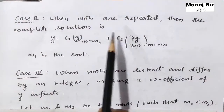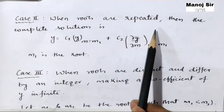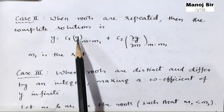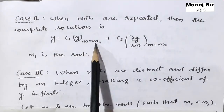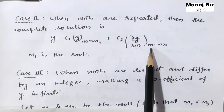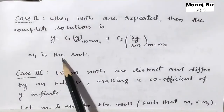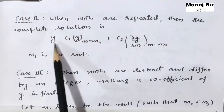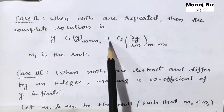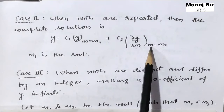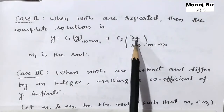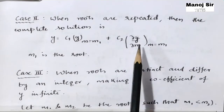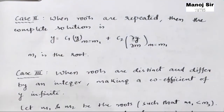Case number two: when the roots are repeated, that is equal. Then the complete solution is given by y equals c1 times y when m equals m1, plus c2 times ∂y/∂m when m equals m1. We will achieve this when we differentiate y partially with respect to m, where m1 is the repeated root of the indicial equation.